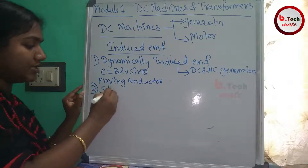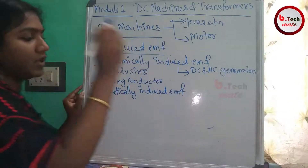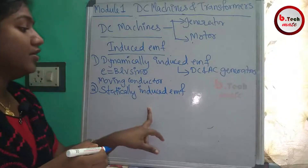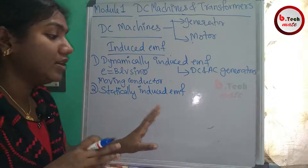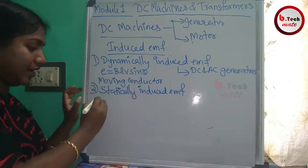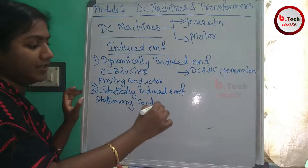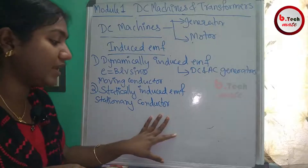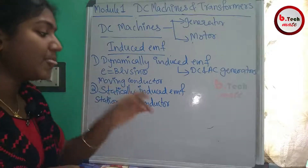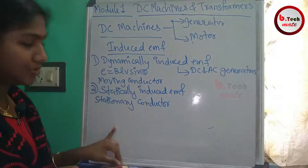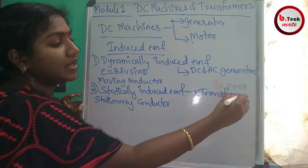The second type is statically induced EMF. This is the EMF induced due to the rate of change of flux linkage in a stationary conductor. Here the conductor does not move — instead, the flux linkage changes, inducing an EMF. This is called statically induced EMF and is seen in transformers.